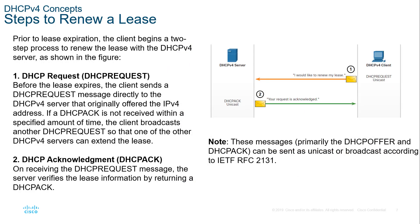For renewal, the client sends a DHCP Request as a unicast, indicating it wants to renew its address. The server responds with a unicast DHCP ACK, acknowledging the renewal.